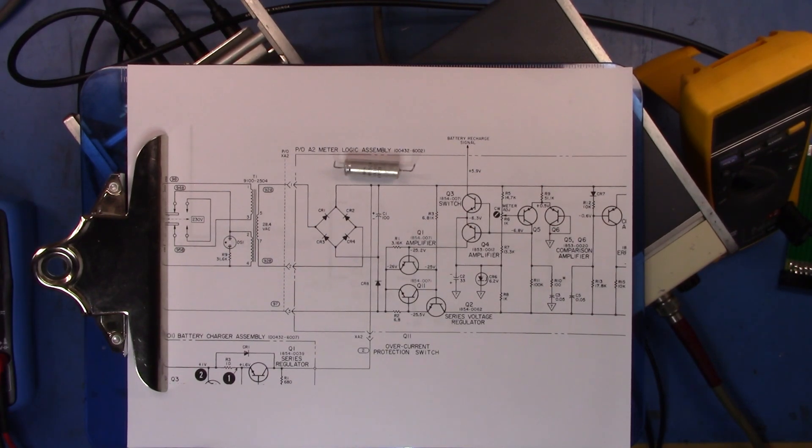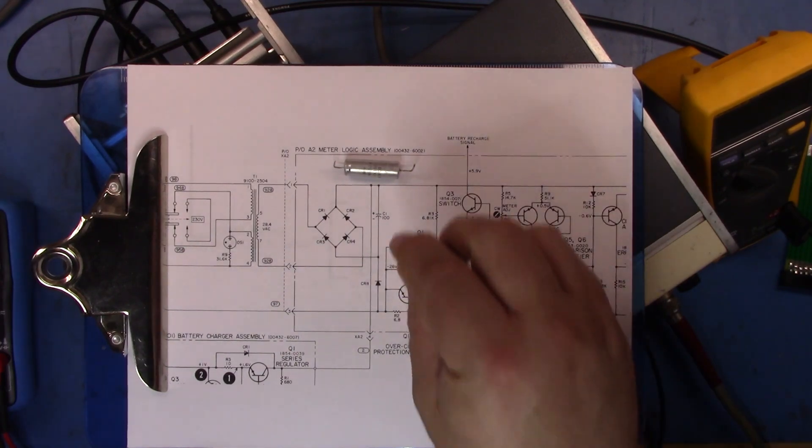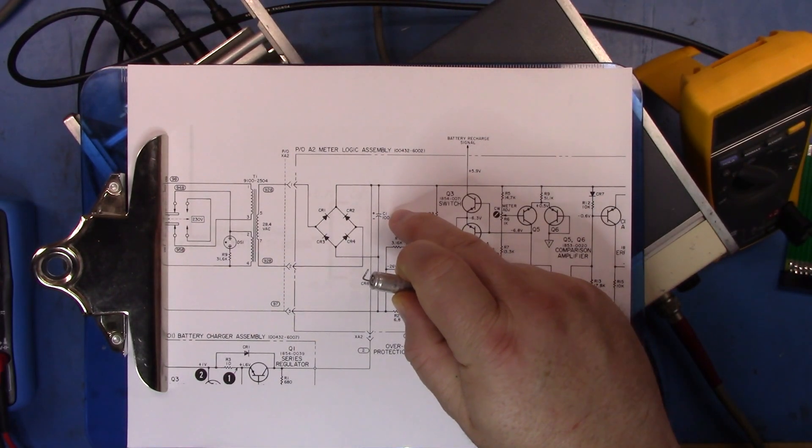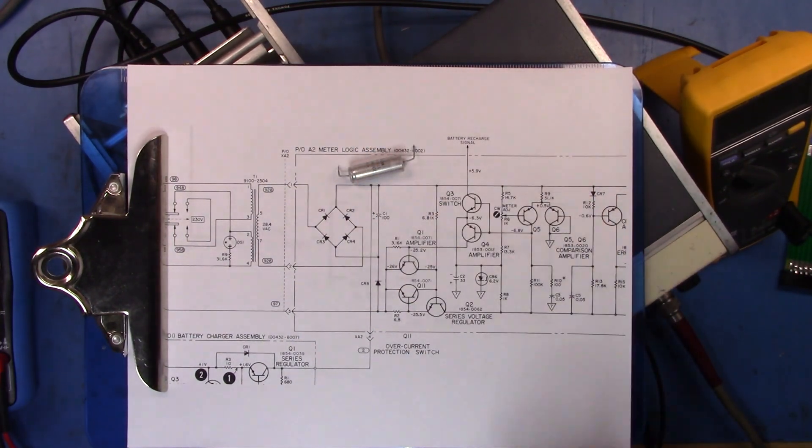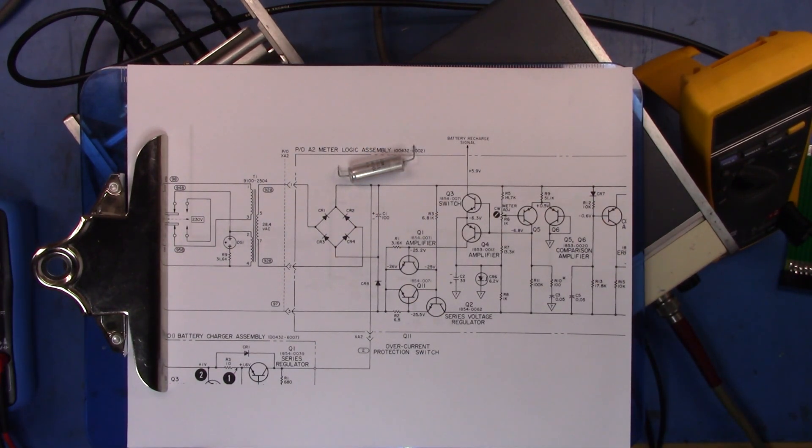If you remember where we finished up on the previous part, I had just replaced C1 with an electrolytic capacitor that I had, and that had returned our power rails to be within spec or to be good and the meter to run.